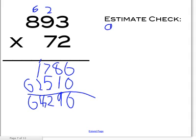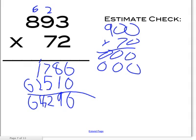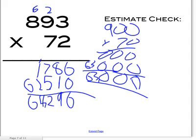Then you do an estimate check. You put 900. And what would you put for 72? That's 70. So you do 900 times 70. Working through it, you get 63,000. It's close to 64,296, so you know you're right. Is there a shortcut — a way to solve 900 times 70 without fully working it out? Yeah, you could just do 9 times 7 equals 63 and then add three zeros.